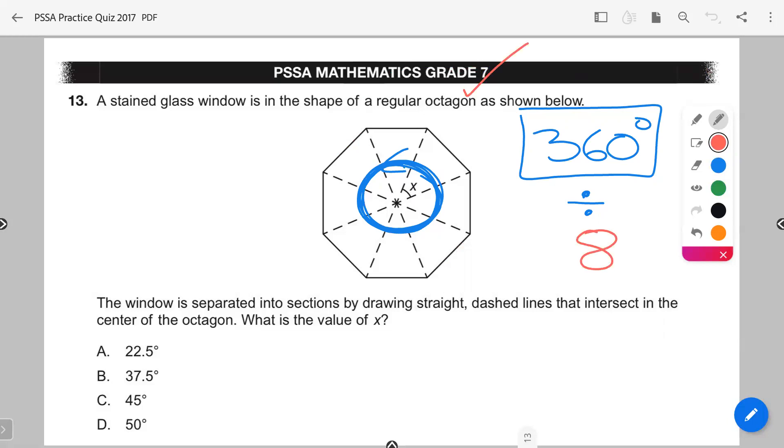360 here on our calculator divided by 8 will give us our value, which is 45 degrees for each of these internal angles. And that is essentially all you'd have to do.